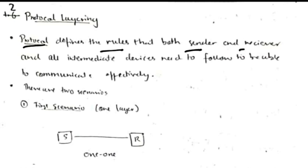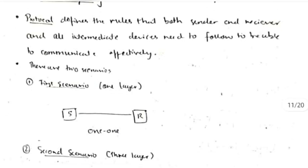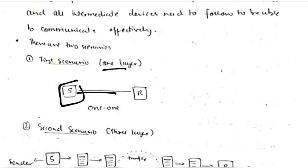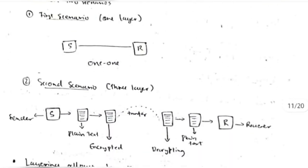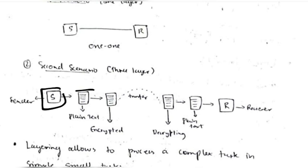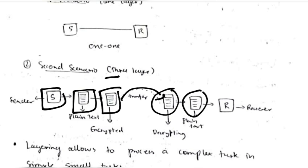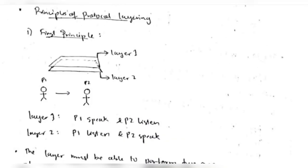A protocol defines the rules that both sender and receiver must follow for effective communication. Protocol layering: in a simple scenario the sender sends directly to the receiver; in a layered scenario, the message is encrypted before transfer and decrypted on the receiver side — a three-layer process. The number of modules present in the process is the layering.